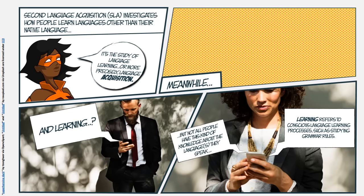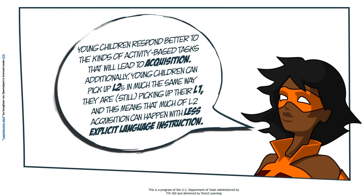Not all people have this kind of knowledge about the languages that they speak. For example, native speakers can correctly identify sentences that are grammatically incorrect, but not all of them could explain why a certain sentence is incorrect. Young children respond better to the kinds of activity-based tasks that will lead to acquisition. Additionally, young children can pick up L2s in much the same way they are still picking up their L1, meaning that much of L2 acquisition can happen with less explicit language instruction.